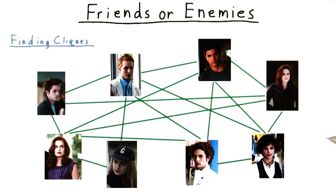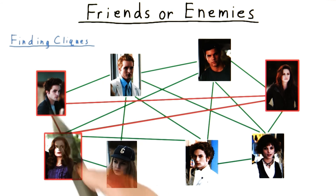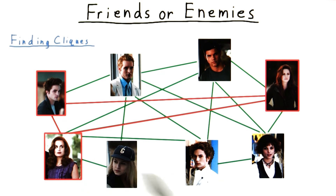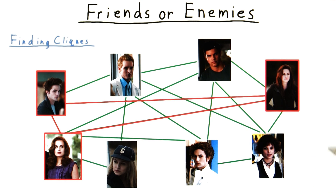Contrast this with the problem of identifying cliques. By clique, I mean a set of people who are all friends with each other. For instance, here is a clique of size 3 — every pair of members has an edge between. Cliques of that size aren't too hard to find. As we look for larger cliques, however, the problem becomes harder and harder to solve.